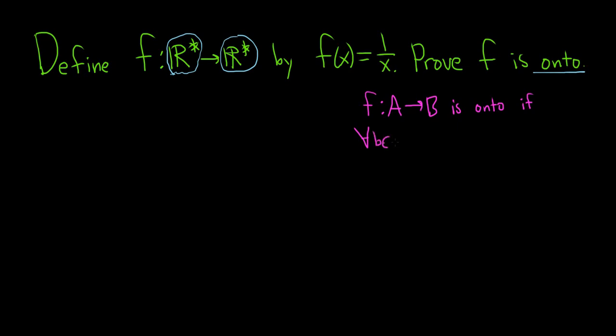little b in capital B, we can find some little a in capital A. So there exists, that's what this symbol means, a little a in capital A, such that f of little a is equal to little b.